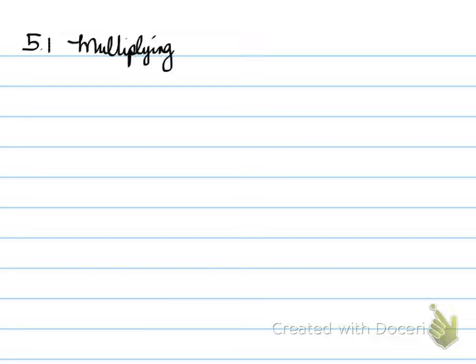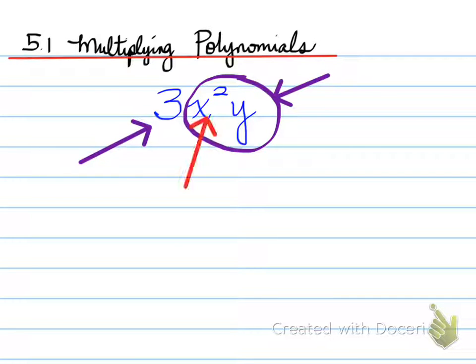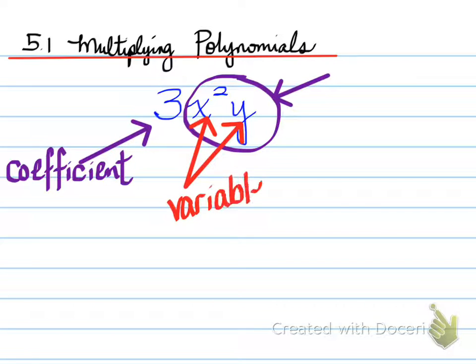All right, looking at 5.1 multiplying polynomials. Let's look at the first expression here, and in particular these three pieces right here. The first one, that's this one over here, is known as the coefficient. The coefficient is the number that is in front of letters. The letters represent variables. So the coefficient is located in front of the variables. The whole thing together, 3x squared y, represents the term.